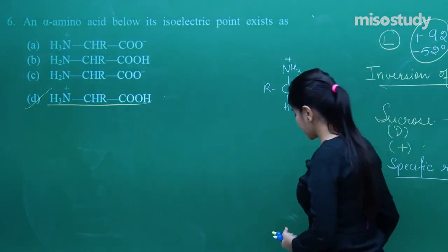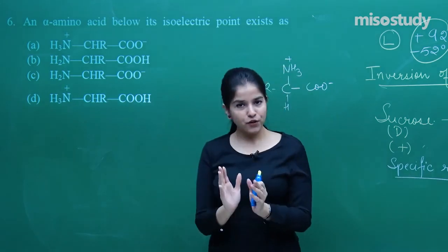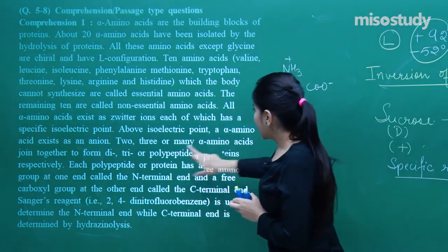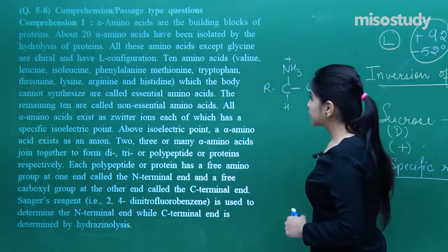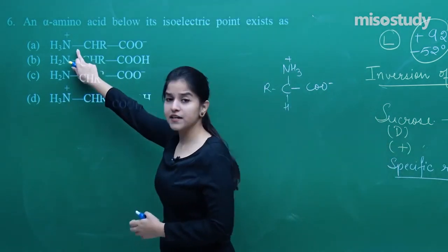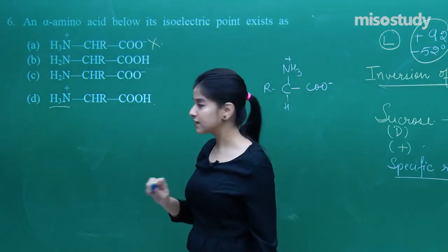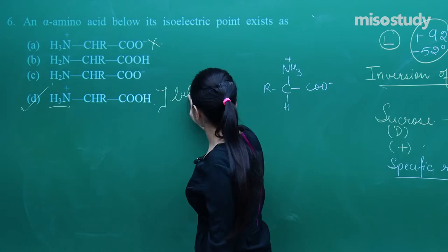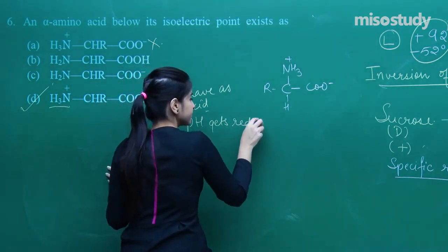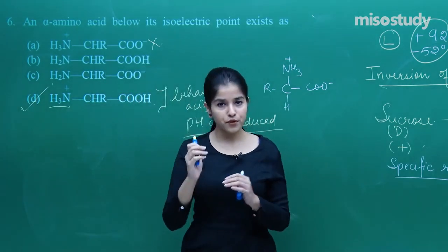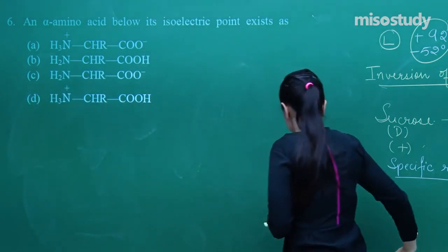The next question asks: an alpha amino acid below its isoelectric point exists as what? The passage mentioned that above the isoelectric point it exists as an anion, so below it will exist as a cation. At pH below the isoelectric point the amino acid behaves as an acid — pH gets reduced — so it exists as a cation. Only the option with a cation is correct.